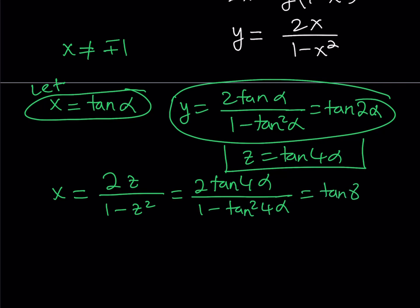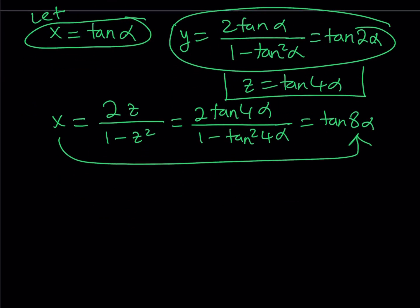We already had a value for x, but it doesn't hurt to have a second one because we can set them equal to each other. This is the beauty of trigonometric substitutions — that's why trigonometry is awesome. So x equals tangent α and x equals tangent 8α, which implies that tangent 8α equals tangent α.